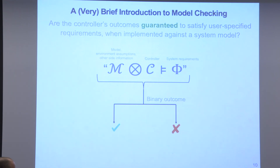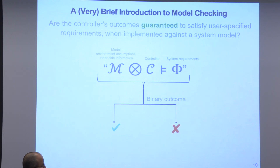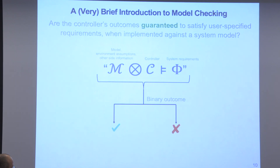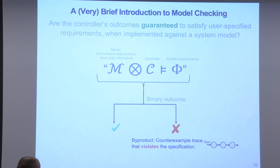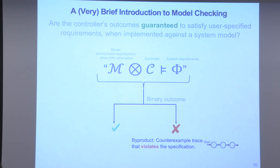The outcome is typically two things: either yes, this controller when implemented on the model satisfies the specifications — the green check — or a red counterexample that gives one reason why things may not work.